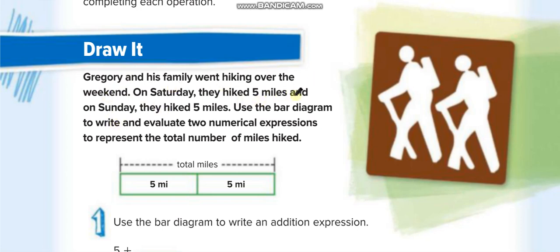Here in the first example, they're saying Gregory and his family went hiking over the weekend. On Saturday they hiked 5 miles and on Sunday they hiked 5 miles. Use the bar diagram—this is for Saturday 5 miles, this is for Sunday 5 miles. We all know that if they ask us the total miles, it is 10. 5 plus 5 is 10, right? Now what they want us to do: use the bar diagram to write and evaluate two numerical expressions.